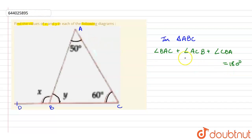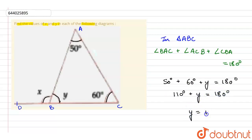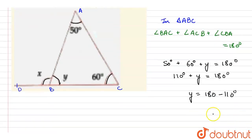So putting the individual values of these angles: 50 degrees plus 60 degrees plus Y will be equal to 180 degrees. 50 plus 60 is 110 degrees. So 110 degrees plus Y will be equal to 180 degrees. So the value of Y will be equal to 180 degrees minus 110 degrees, giving us Y equal to 70 degrees.